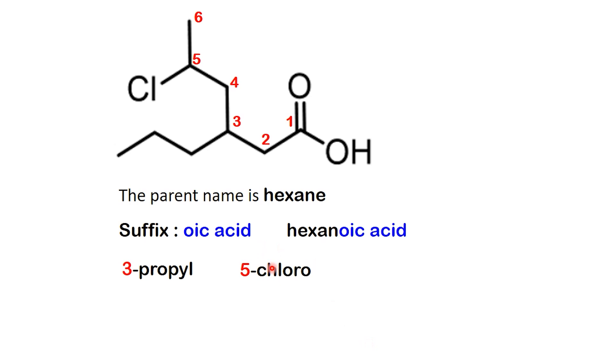Next, we put them in alphabetical order. Chloro comes before propyl. Putting it all together, the correct name is 5-chloro-3-propylhexanoic acid.